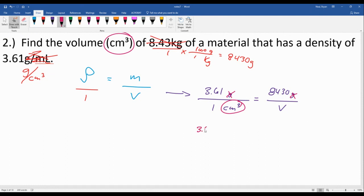So we can cross multiply. We've got 3.61 times that volume we're looking for. One times 8430 is obviously not going to do a whole lot.